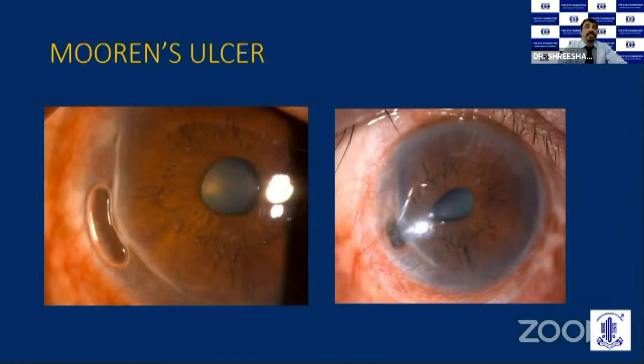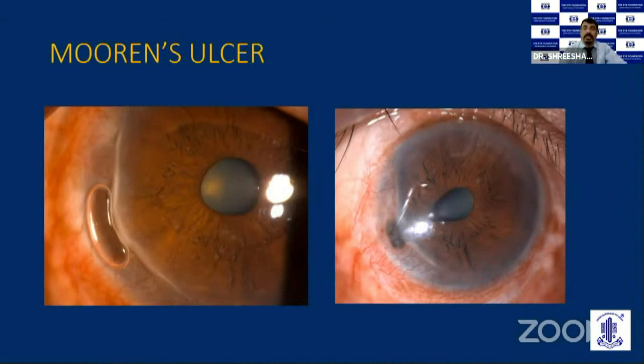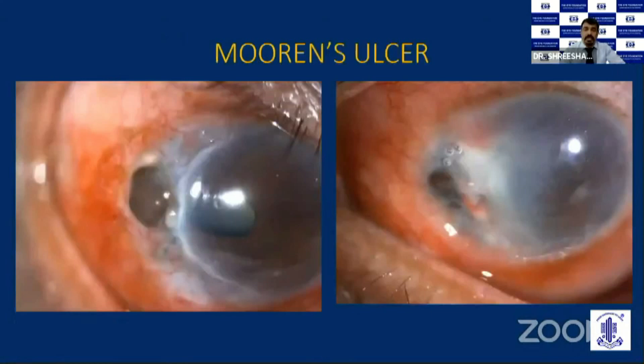The next condition is Mooren's ulcer, a peripheral ulcerative keratitis that we commonly see in our practice. It involves the peripheral cornea in the interpalpebral region, either nasally or temporally, and then progresses circumferentially superiorly or inferiorly. If not treated, it can lead to perforation. This is one of our cases who did not come for follow-up and ended up with perforation, and there were early signs of phthisis.